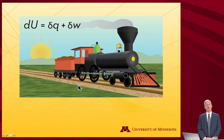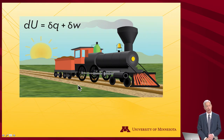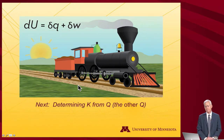So that is the Van't Hoff equation used to understand the temperature dependence of equilibrium constants and also to measure enthalpies of reaction. Next we're going to look at determining the equilibrium constant from Q — and in this case it's the other Q.